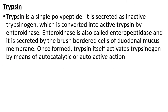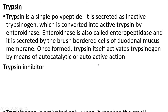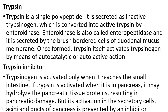Trypsin is a single polypeptide. It is secreted as inactive trypsinogen, which is converted into active trypsin by enterokinase. Enterokinase, also called enteropeptidase, is secreted by the brush border cells of the duodenal mucous membrane. Once formed, trypsin itself activates trypsinogen by means of autocatalytic action. Trypsin inhibitor: trypsinogen is activated only when it reaches the small intestine. If trypsin were activated while still in the pancreas, it could hydrolyze the pancreatic tissue proteins, resulting in pancreatic damage. Its activation in the secretory cells, acini, and ducts of the pancreas is prevented by a trypsin inhibitor.